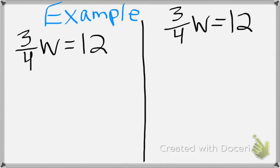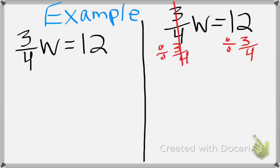The first way: if we're solving for w, we need to get w by itself, which means we need to get rid of its coefficient of three-fourths. When the coefficient and variable are touching, that's a multiplying relationship. So in order to move three-fourths to the other side, we do the opposite of multiplying — we divide. We divide both sides by three-fourths. It cancels out on the left side, leaving just w.